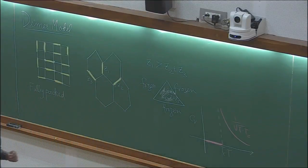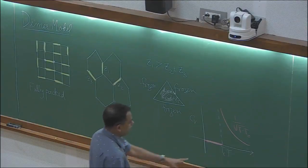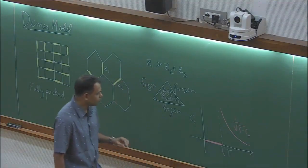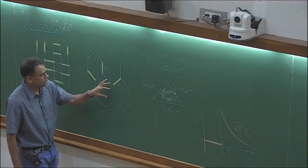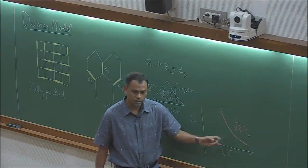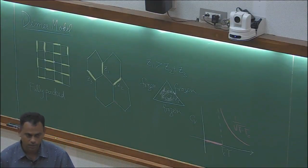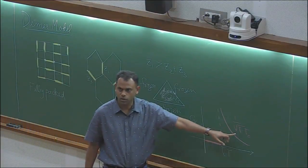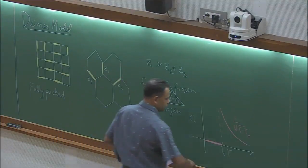Dimer models can show different behaviors. There are many kinds of dimer models — on a simple lattice or on a decorated lattice. Depending on the kind of dimer model you have, there are two kinds of transitions: one like 1/√(T−Tc) and the other like the Ising transition. Depending on the model you choose, it's possible to have either. But for the honeycomb lattice, it is solvable.